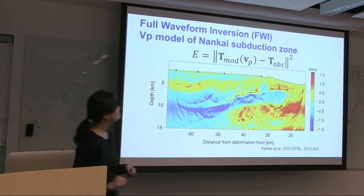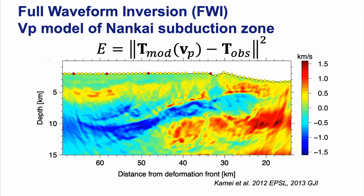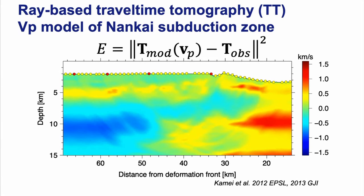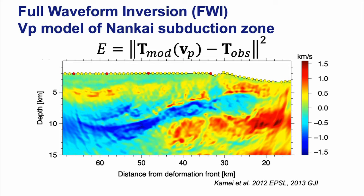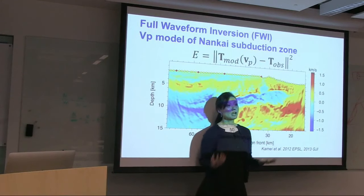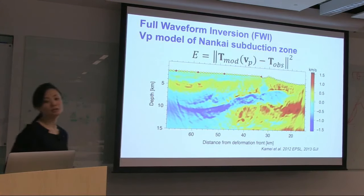When we go from travel time tomography to waveform inversion, we compare the waveform itself — the data directly, not just the first arrival. Comparing the travel time tomography model to the full waveform inversion model: you see the subducting oceanic plate along the left-hand side, the underlying sediments as a low velocity zone, and some tsunamigenic folds. We can interpret a lot more compared to travel time tomography.